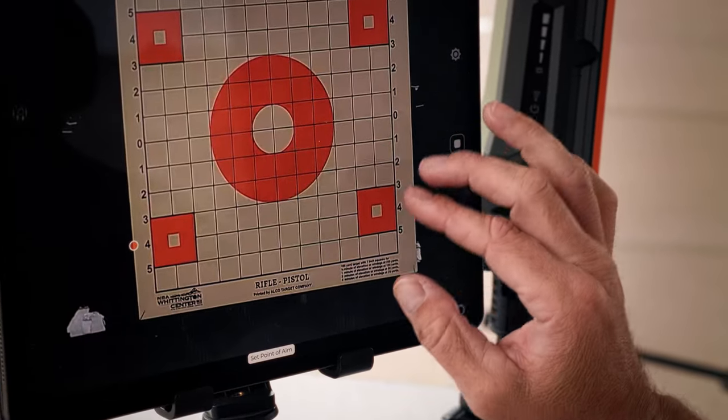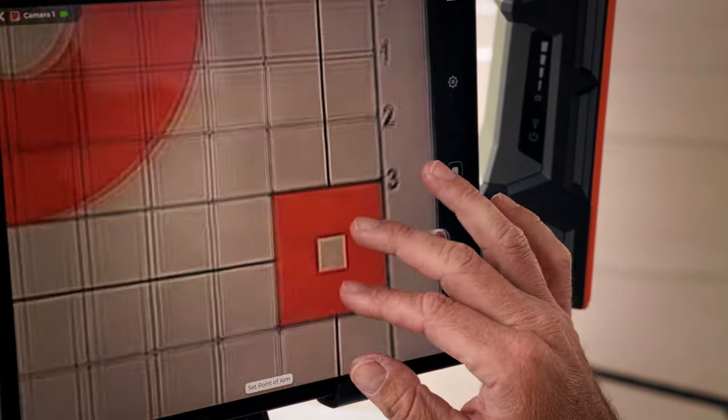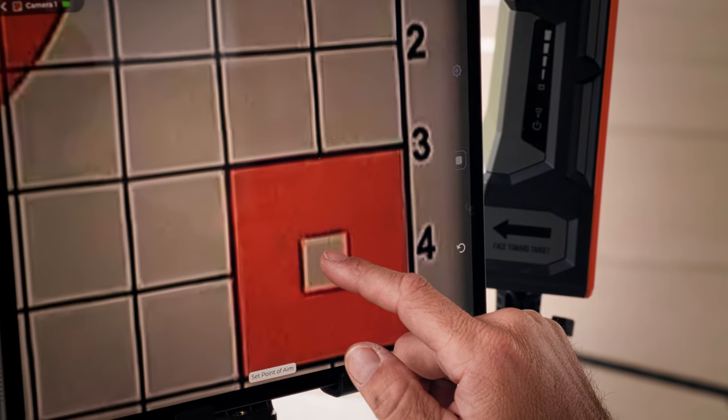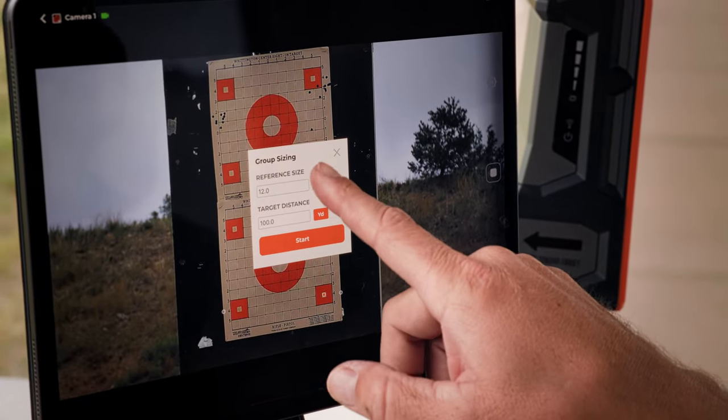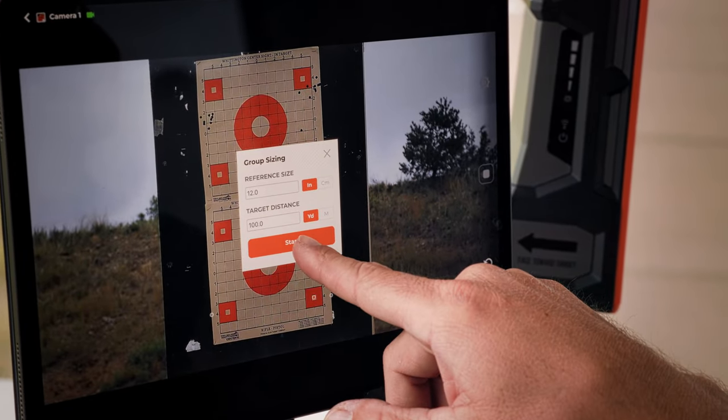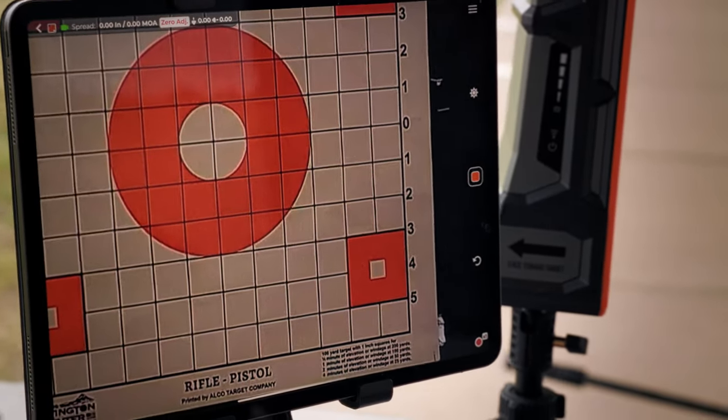This is probably the most important part because you don't always have to aim at the center. The third option is set the point of aim, so we can use the ability to zoom in, then we can mark exactly in that bullseye where we want. Make sure our reference sizing is right. Now we start the calculator.